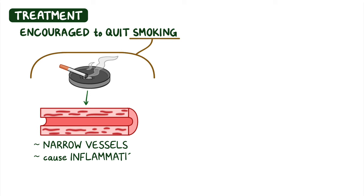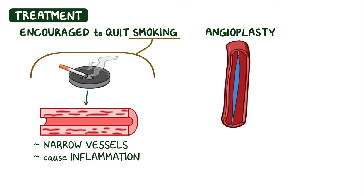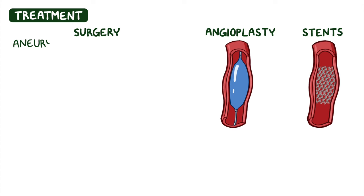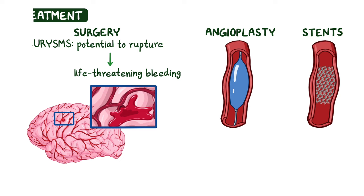Further treatment may include an angioplasty, in which a small balloon is inserted through a catheter and inflated to open up the affected artery. Alternatively, small tubes called stents may be inserted to keep arteries propped open. Finally, surgery may be needed to treat aneurysms that have the potential to rupture and cause life-threatening bleeding.